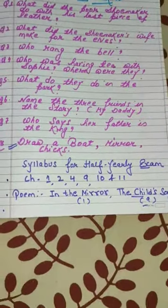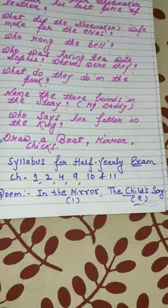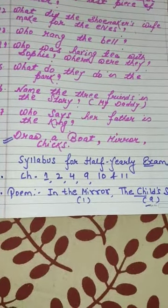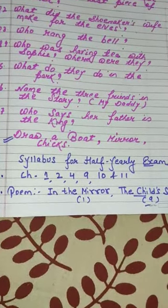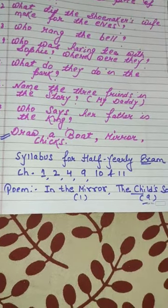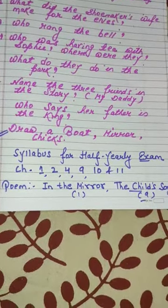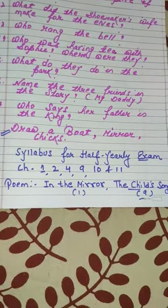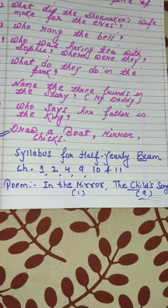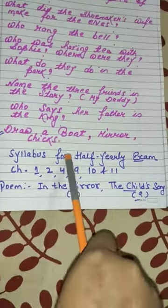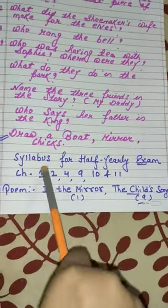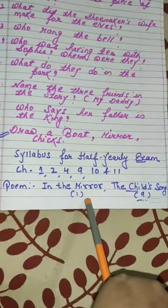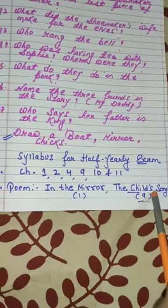Now note down the chapters for the half-yearly exam: Chapter 1, Chapter 2, Chapter 4, Chapter 9, 10, and 11. These are the chapters for the half-yearly exam. And the poems are 'In the Mirror' and 'The Child's Song'.